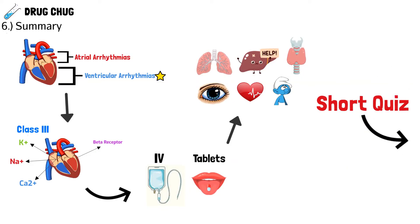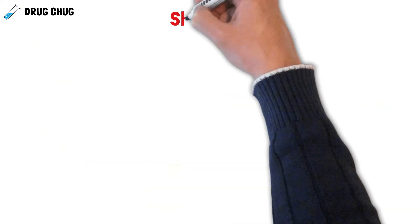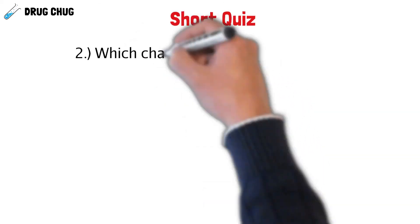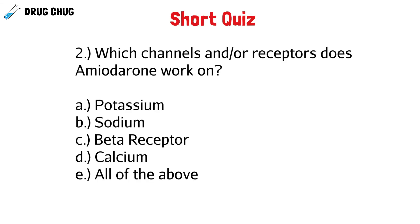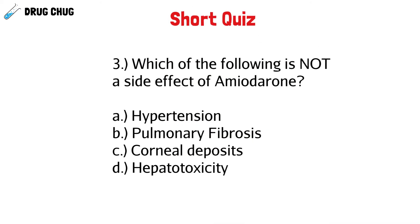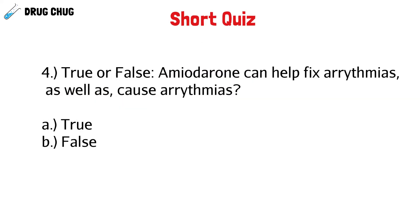Now let's take a short quiz to see what we retained. Question one: which class of antiarrhythmics does amiodarone belong to? Question two: which channels and/or receptors does amiodarone work on? Question three: which of the following is not a side effect of amiodarone? Question four: true or false — amiodarone can help fix arrhythmias as well as cause them.